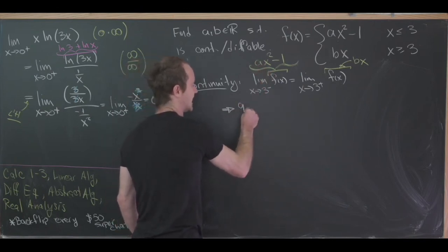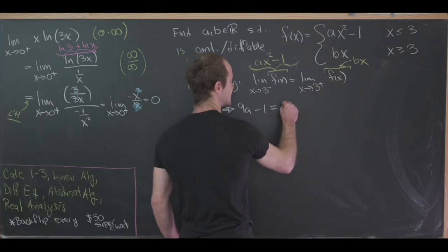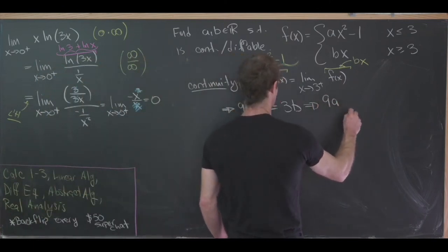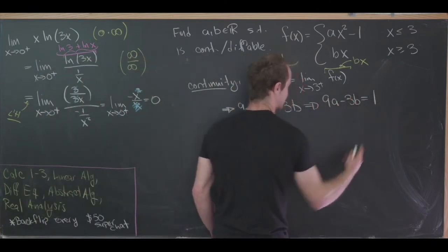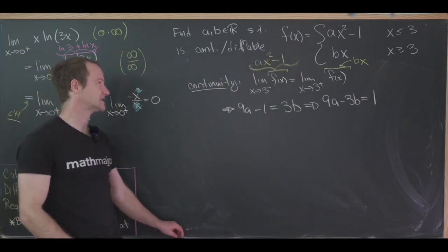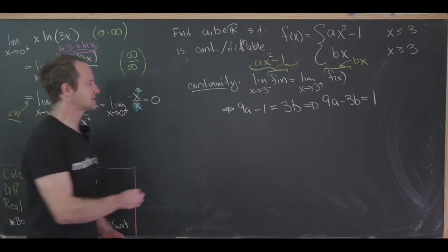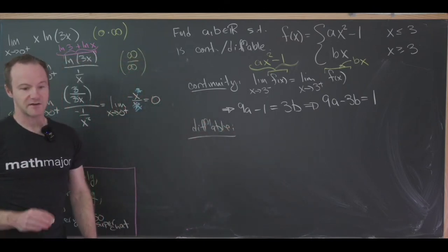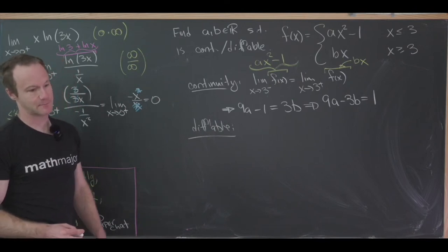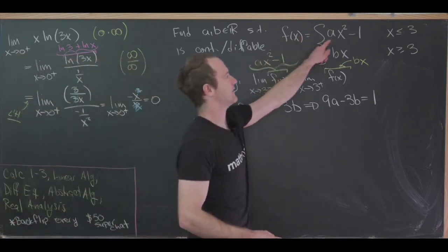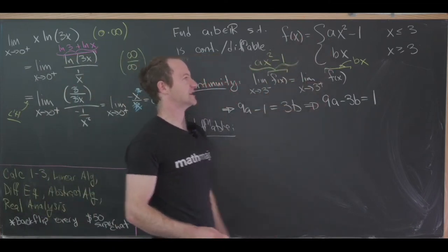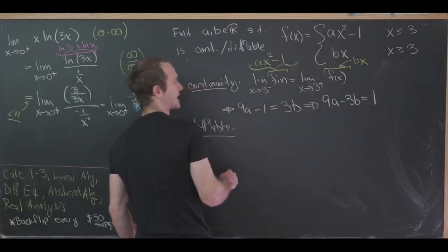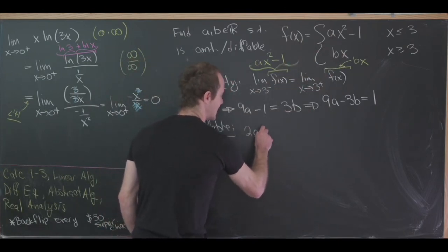When we are below three, f(x) has the form a times x squared minus one, whereas when x is above three, f(x) has the form b times x. We're continuous in both of those places, so we can just plug in three. That gives us nine a minus one equals three b, which we rewrite as nine a minus three b equals one. So we've got an equation relating a and b. Now let's look at what differentiability gives us. For the function to be differentiable, we need the sided derivatives to be the same.